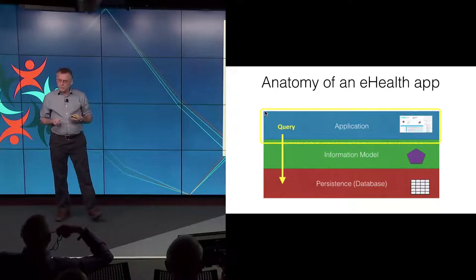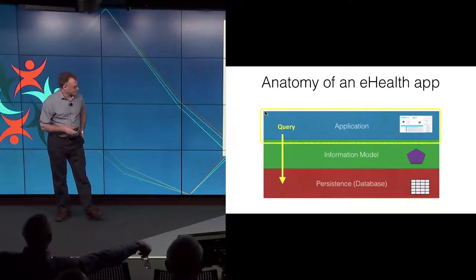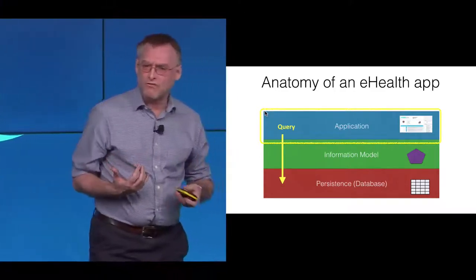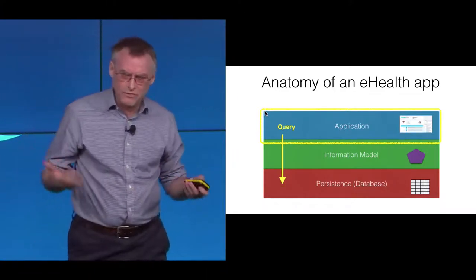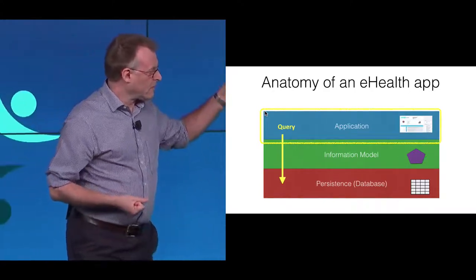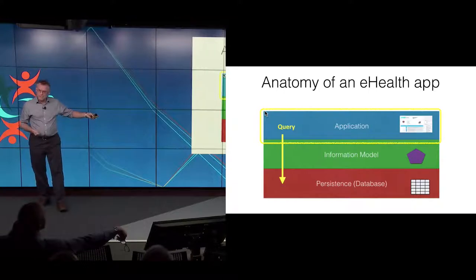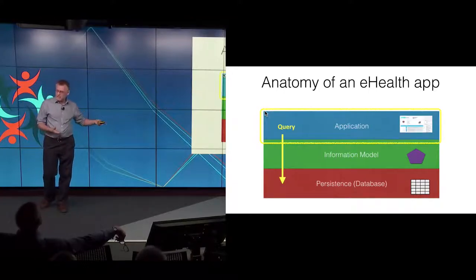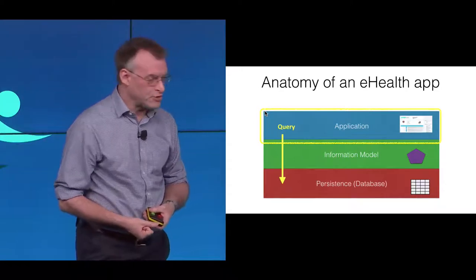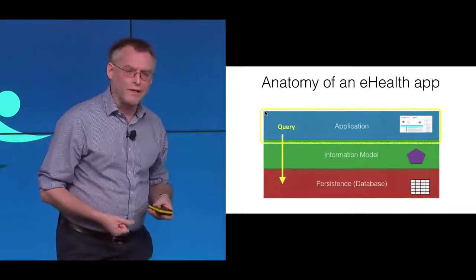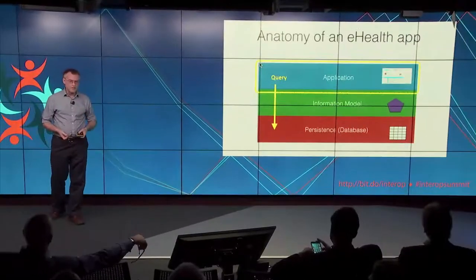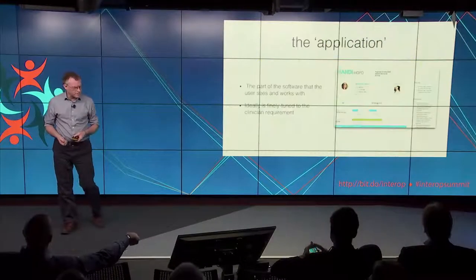So what is this thing called an information model and why does it matter? Here's a pretty simplified version of the anatomy of a health app — what's inside, what's under the hood. Most people have got a vague idea that there's some kind of application, and most people have got a vague idea that there's some kind of persistence or database — or maybe it's just a file, it could be an Excel spreadsheet on a local machine. What most people don't really get to grips with is this thing called the information model that sits in between them, in the vast majority of systems, clinical and otherwise.